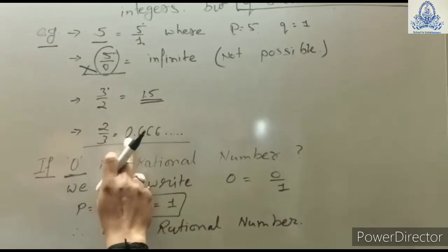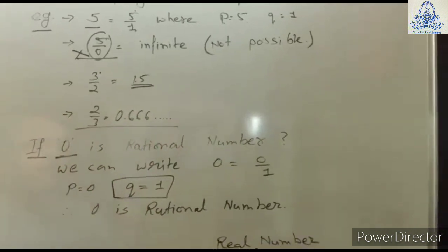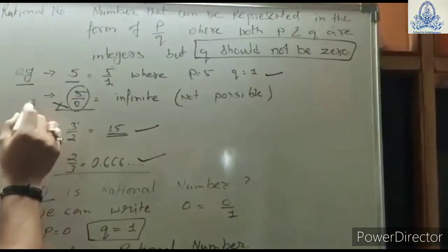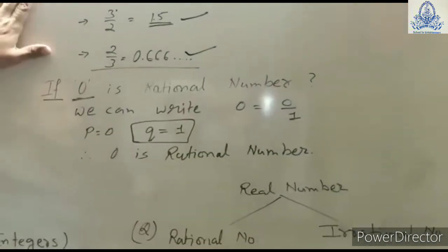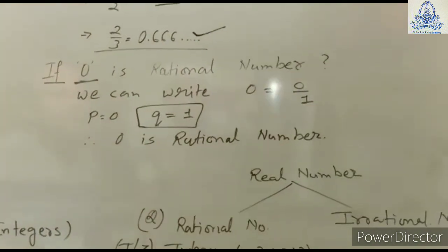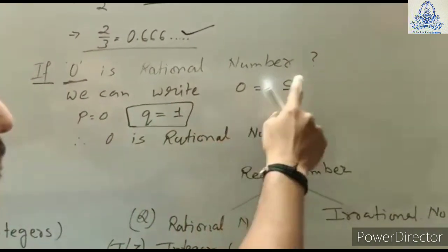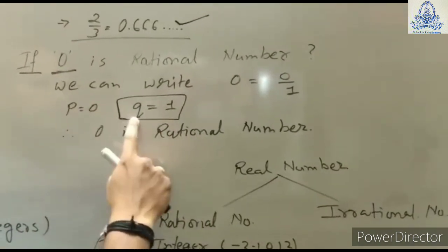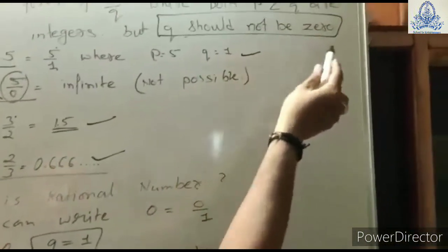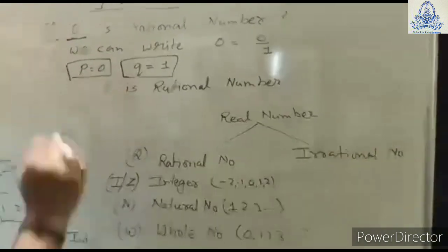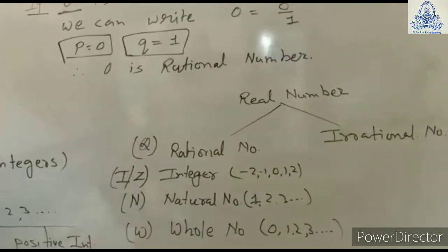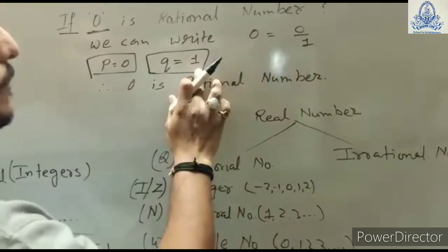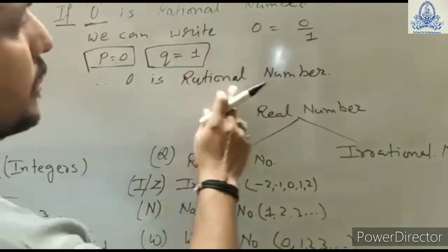Now, can we say 0 is a rational number? We can write 0 as 0/1, since 1 is in the denominator. Here p = 0 and q = 1. The condition is that q should not be 0 — there is no condition on p; the numerator can be any number including 0. Here q equals 1, so yes, 0 is a rational number.